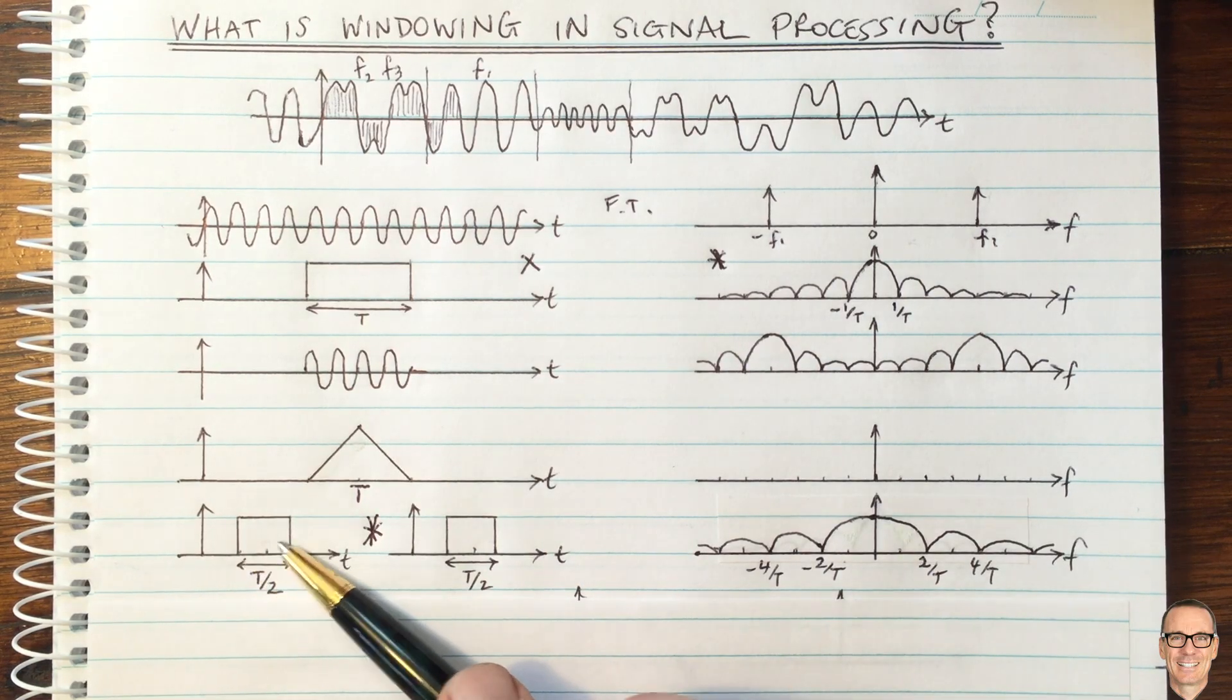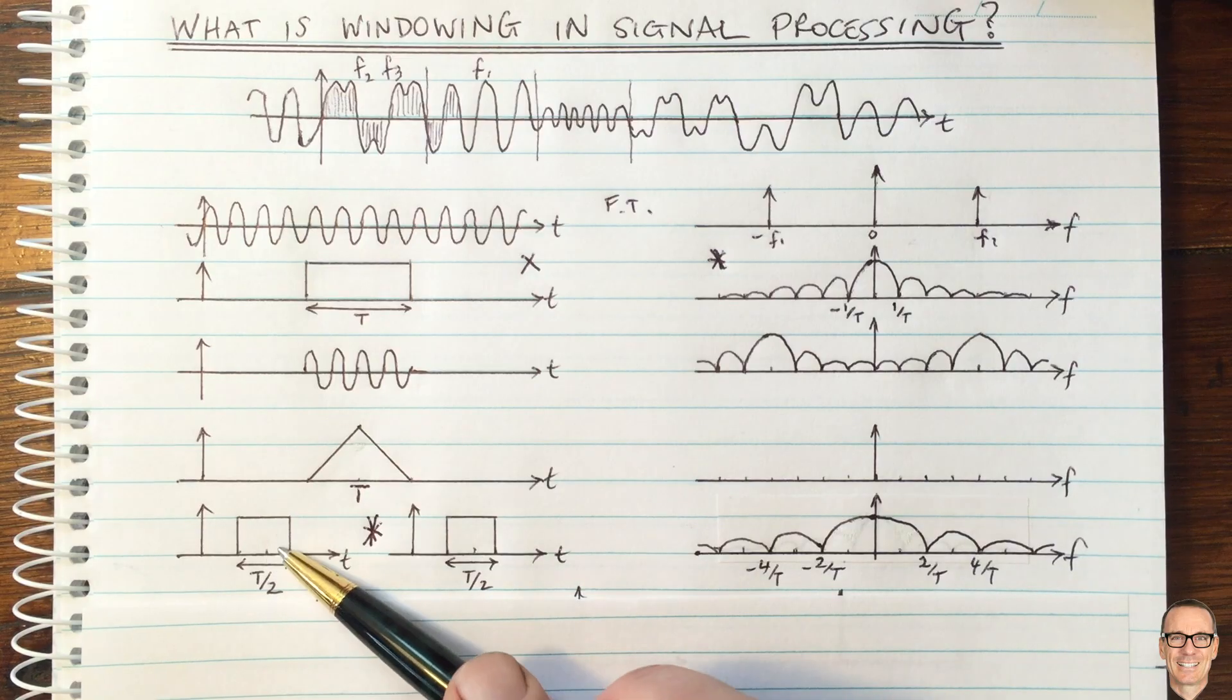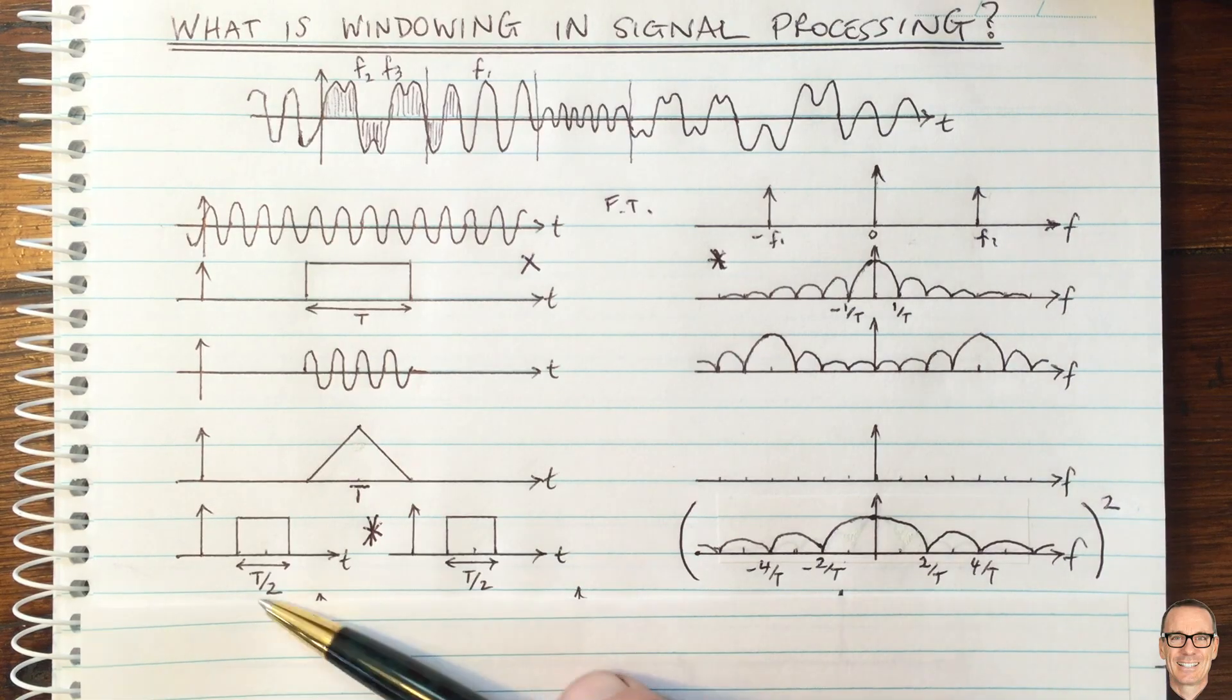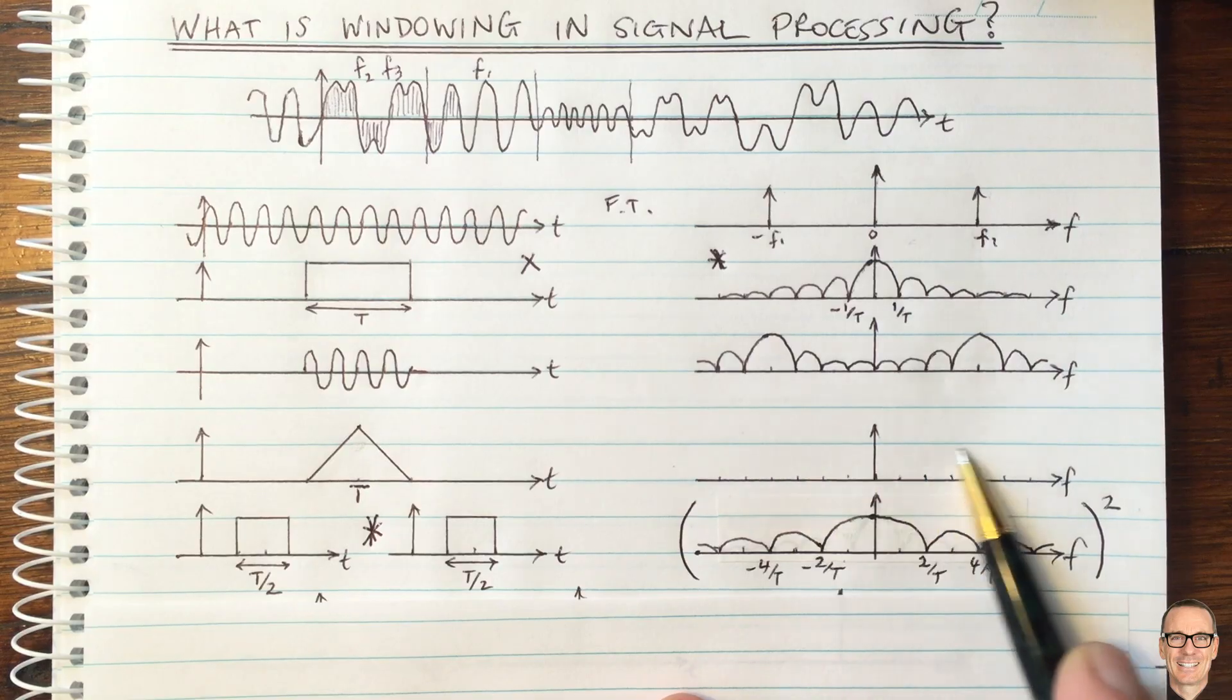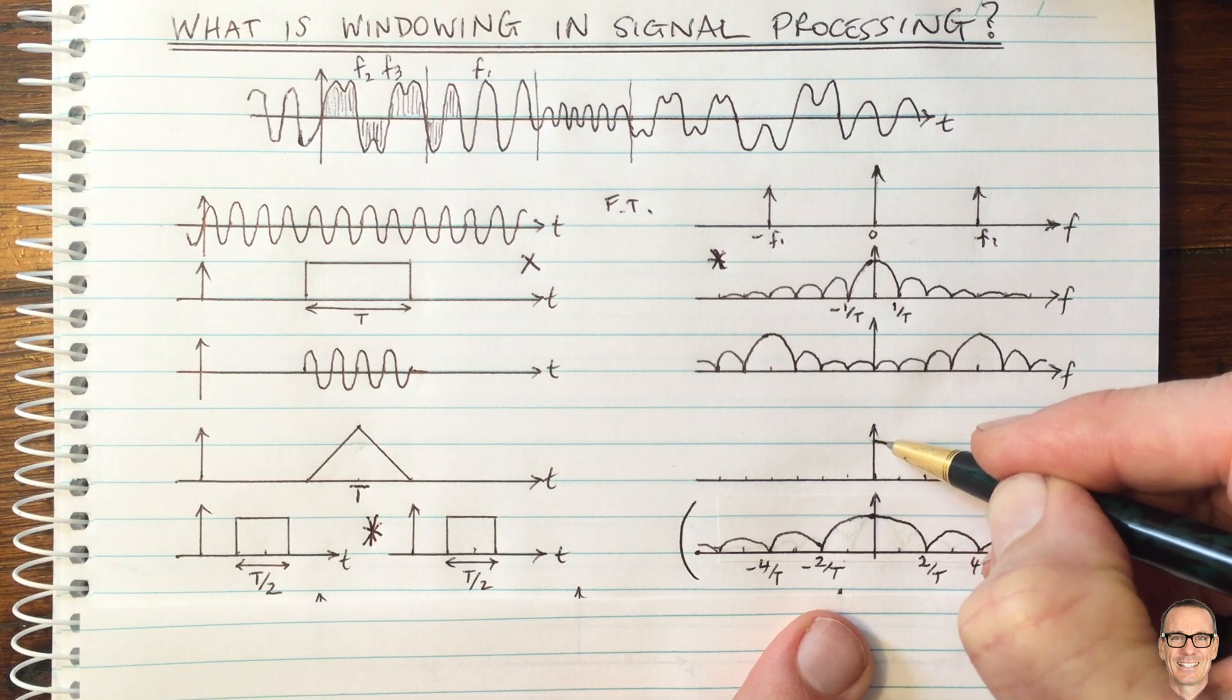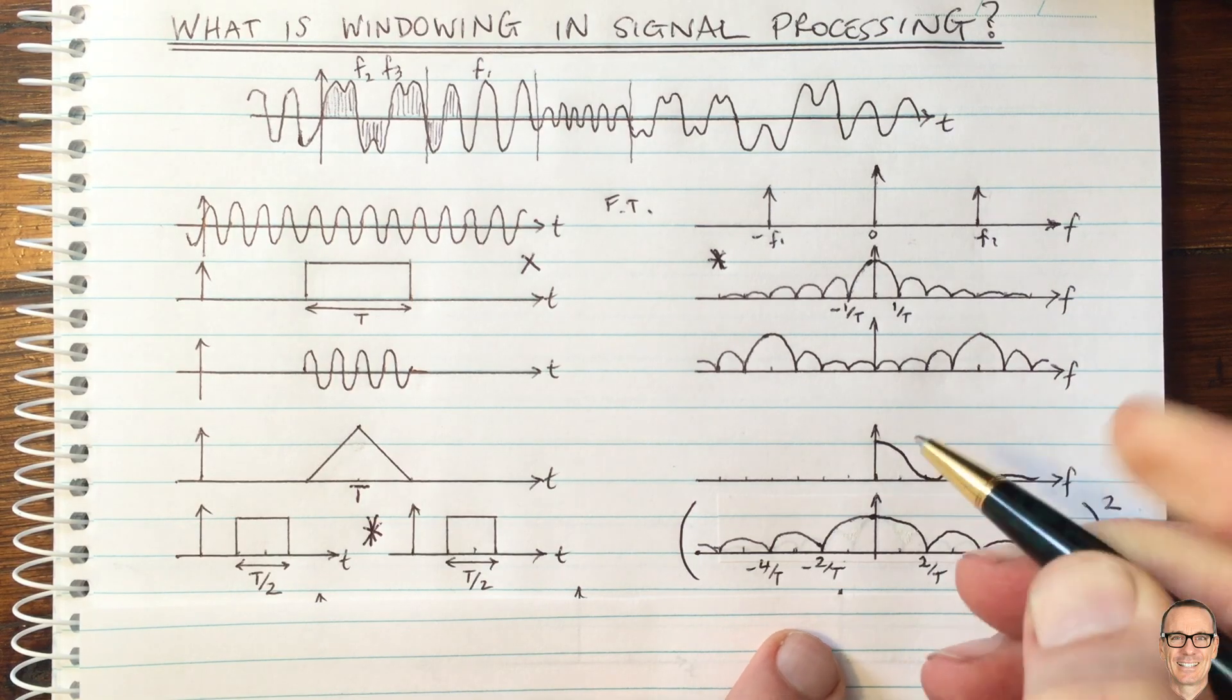So this is the Fourier transform of one of these squares. So now we've got, of course, multiplication. So that's going to be this square of this because these are identical. And so now we're going to have the square of this is going to be the Fourier transform of the triangle. And of course, the square of this is going to be something that looks like this. It's going to be coming down here and it's going to have these small side lobes.